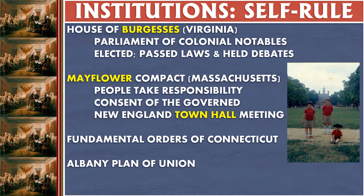Lastly, I just want to talk a little bit about institutions. There are a lot of institutions where the colonists had practice. If you look at this picture, this is the House of Burgesses — that building in the background is in Williamsburg, Virginia. The House of Burgesses was basically like a small Congress, a parliament of colonial notables. They were elected, they ran for office, they passed laws, they debated the issues of their day, they didn't just do what the governor wanted them to do. It gave a lot of colonists experience in what this thing called government is. Even though they didn't have ultimate power, it was a little bit like student government — you're actually going through the motions of making decisions.